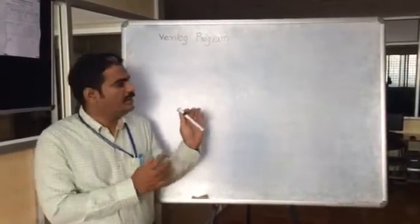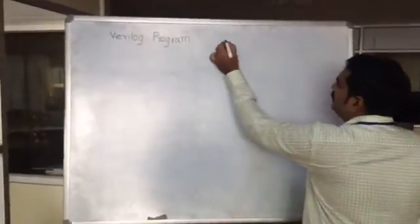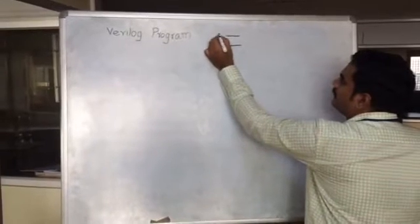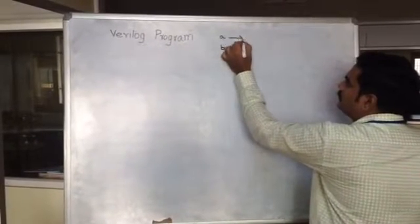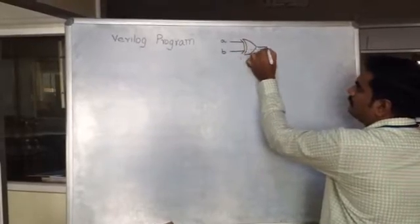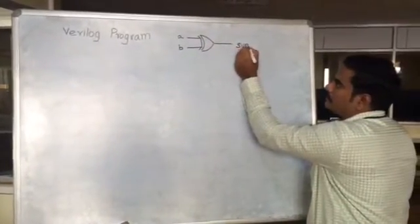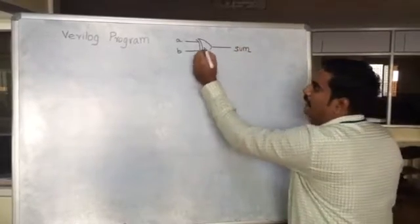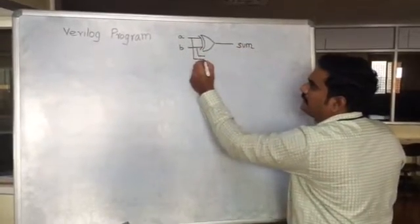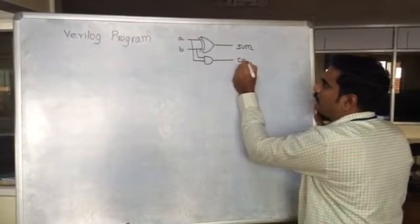We will assume a half adder circuit. The half adder consists of an XOR gate. It has two inputs A and B. These two inputs are given to an XOR gate to produce a sum output. Again, the two inputs are given to an AND gate to get the carry output.